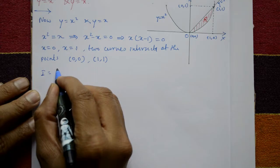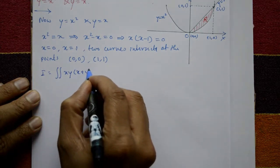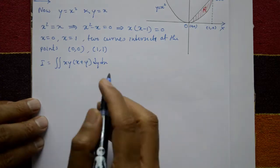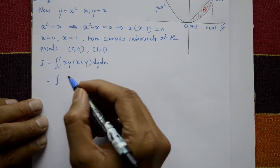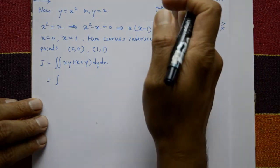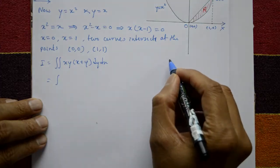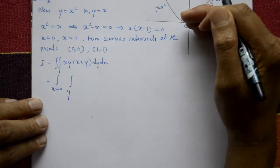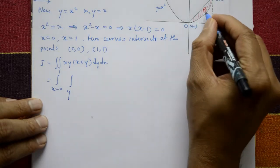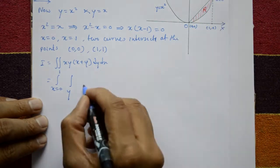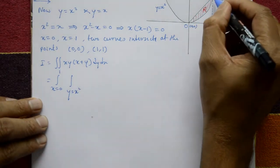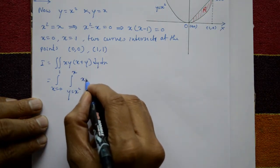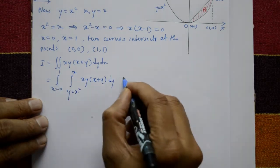I equals the double integration of xy(x plus y) dy dx. For the limits: x goes from 0 to 1. For y, we move from bottom to top — the lower curve is the parabola y equals x squared, and the upper curve is the straight line y equals x. So y goes from x squared to x.